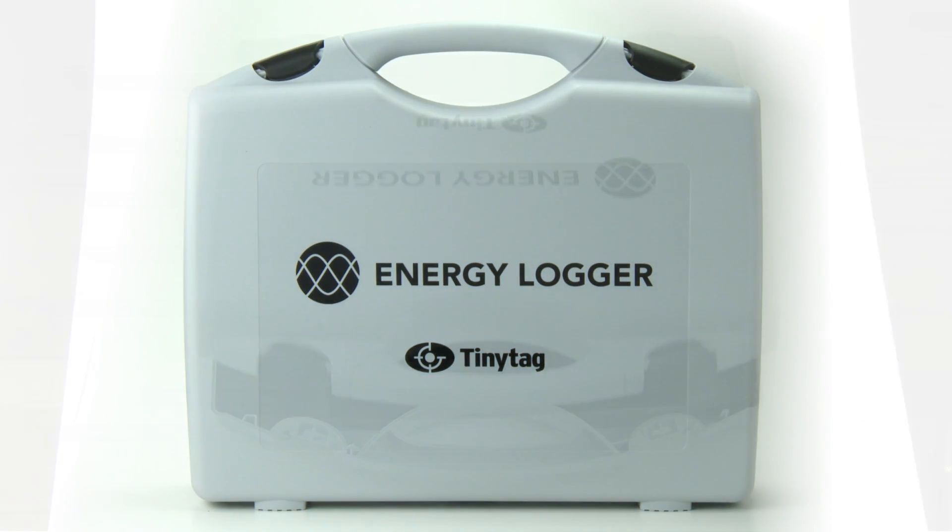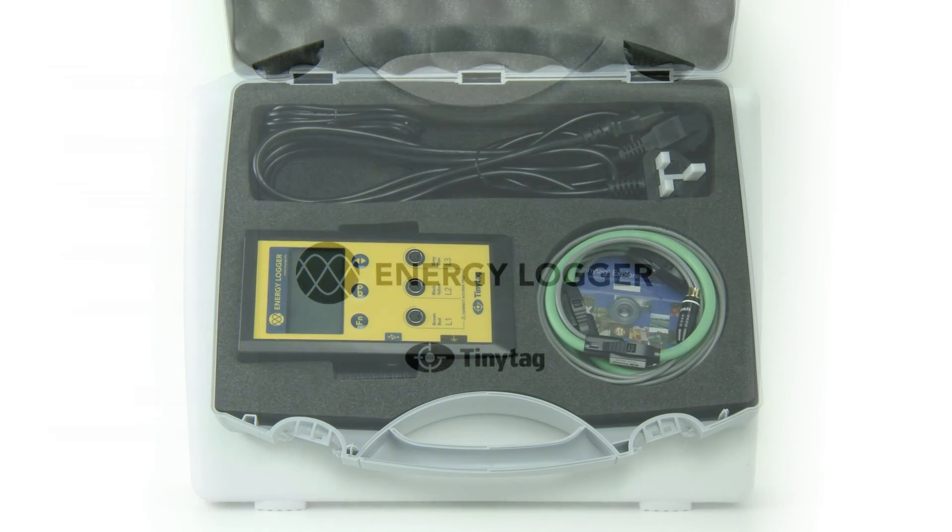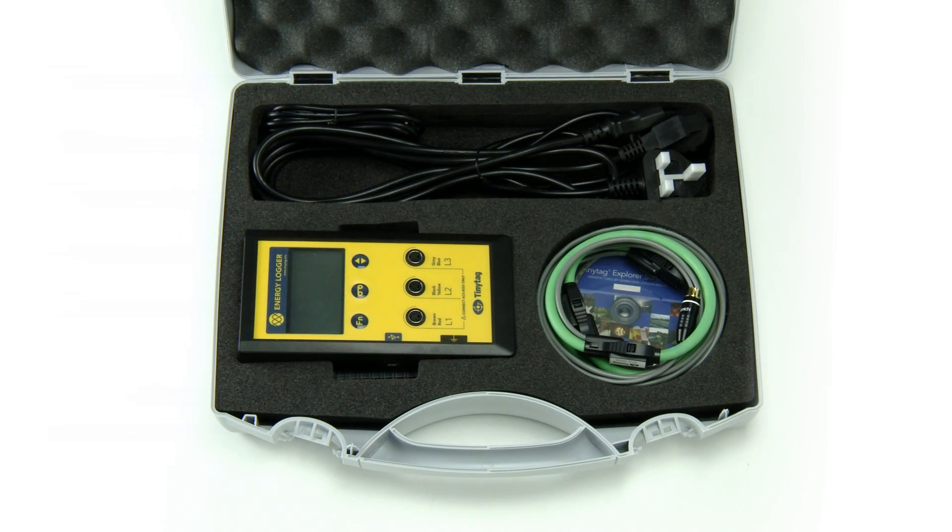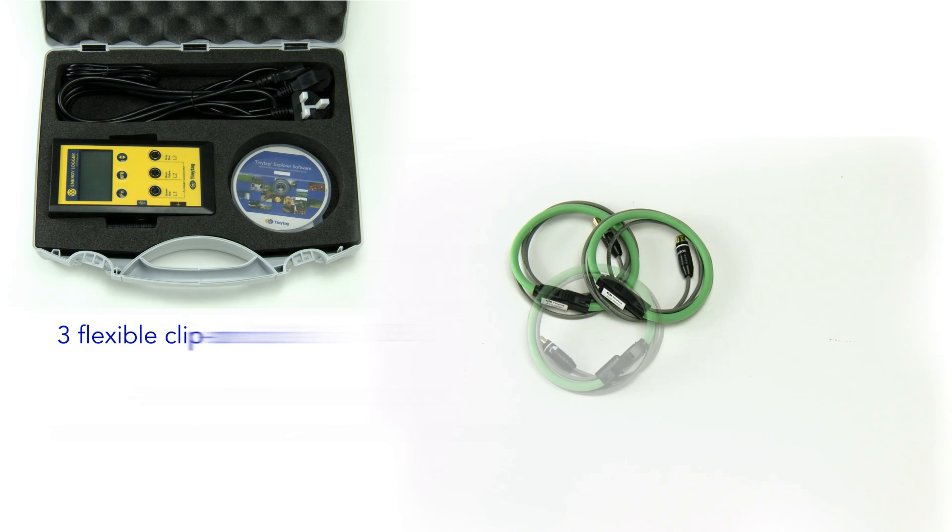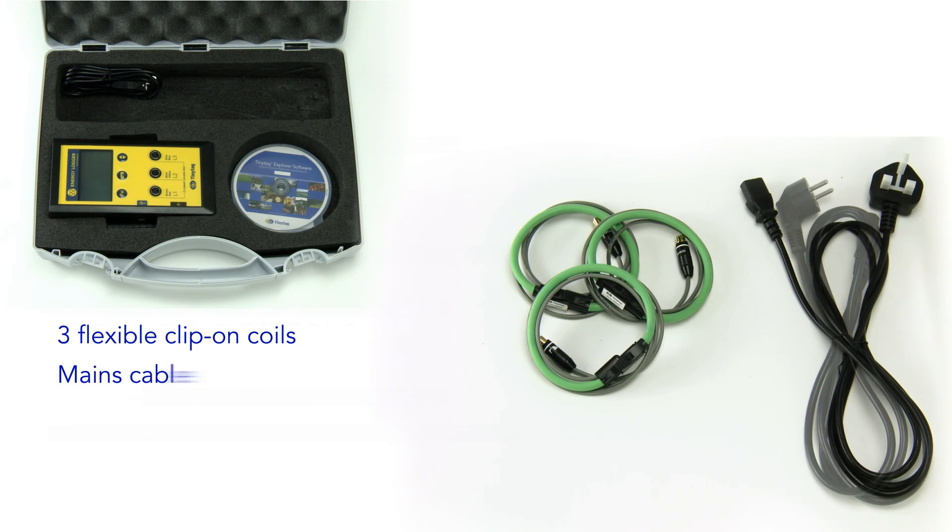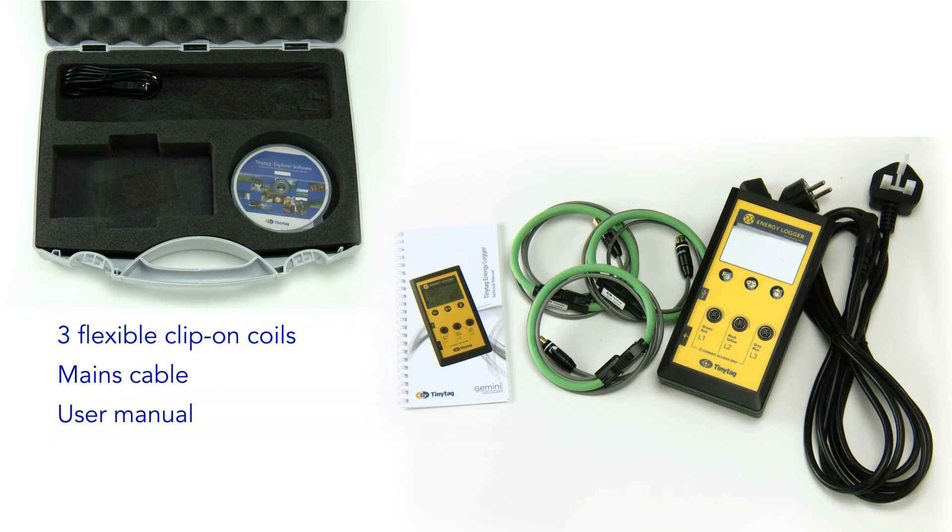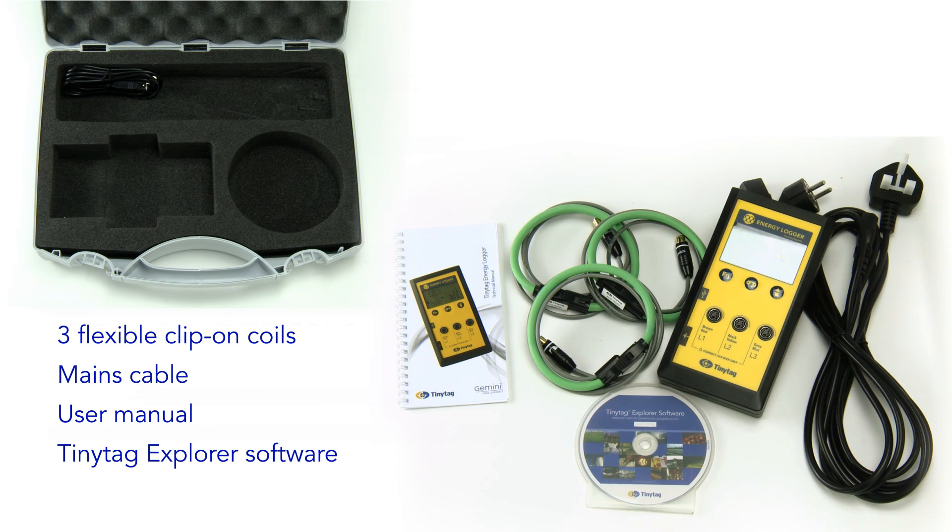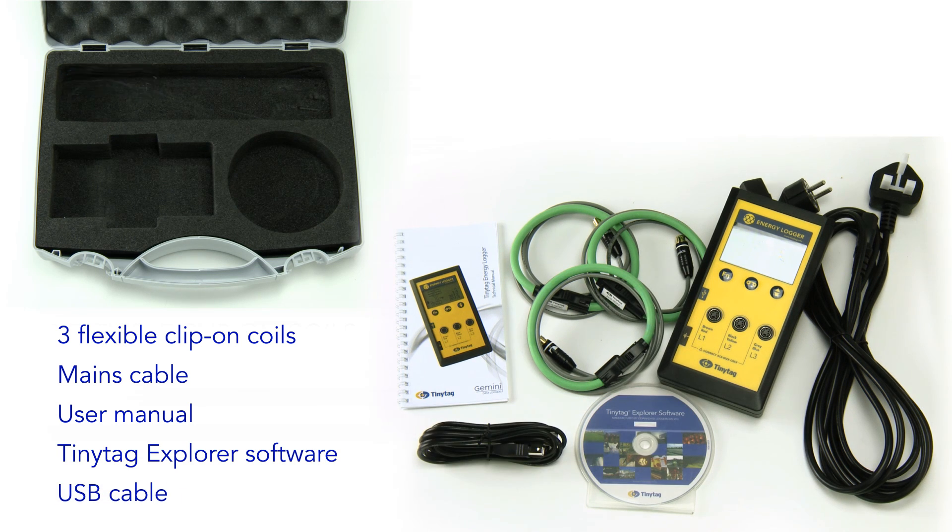The small lightweight energy logger comes with everything needed to start monitoring straight away. It is supplied with three flexible clip-on coils, a mains cable, a user manual, a copy of TinyTag Explorer software and a USB cable for easy viewing of recorded data.